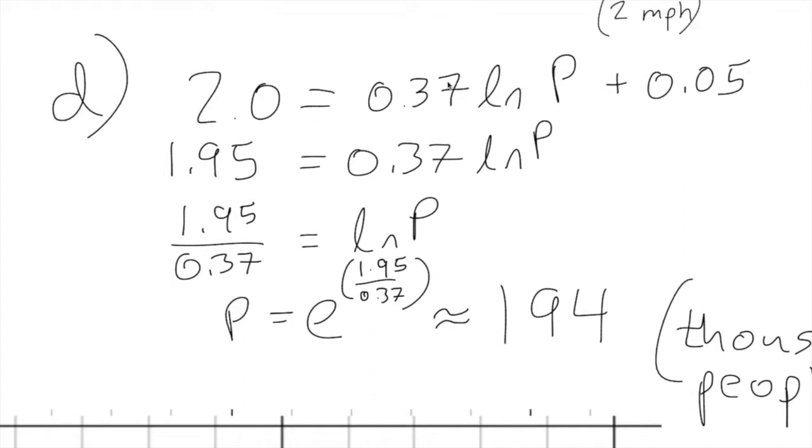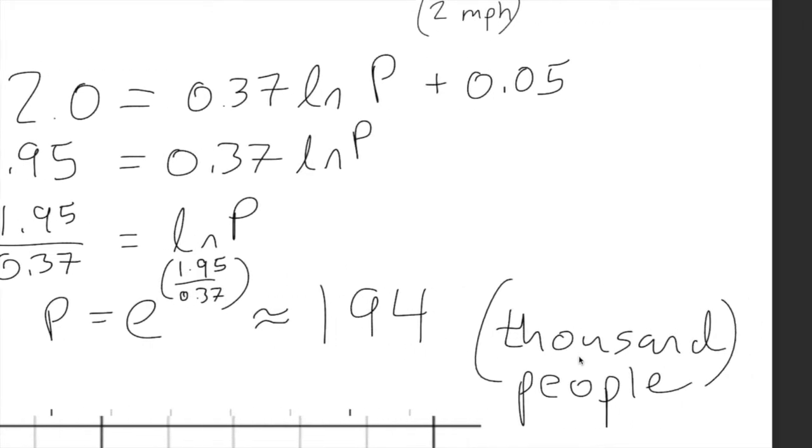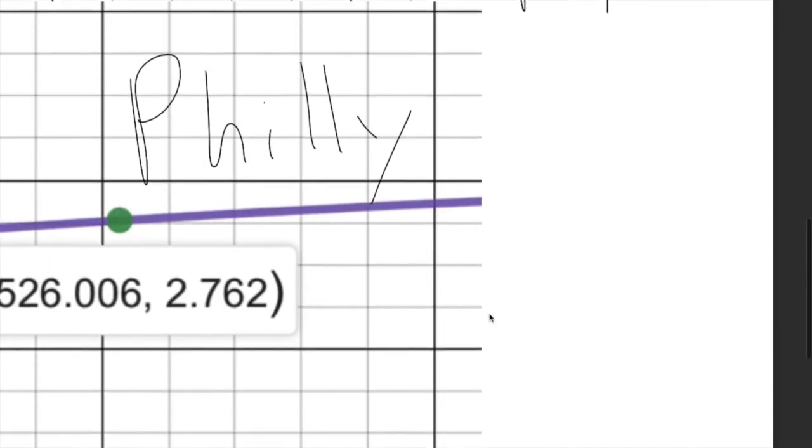And so you can subtract the 0.05 from both sides, divide both sides by 0.37, isolating the natural log of P. That's the goal. Once you have it like this, you can rewrite it as an exponential equation. The power goes on the outside. This fraction is the exponent. You can type it all into your calculator. I think the best way to type it in is just once. Type E parentheses 1.95 over 0.37. You're less likely to make a calculation or a mistake that way. And you get 194,000 people. Where is that on the graph?